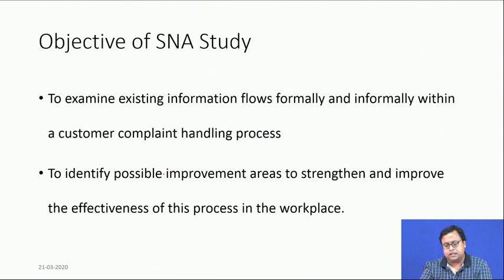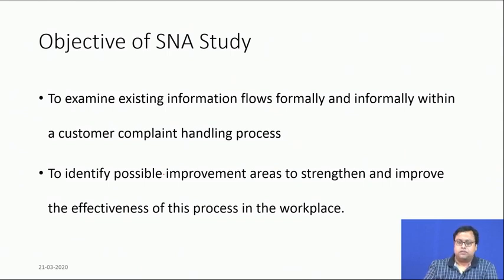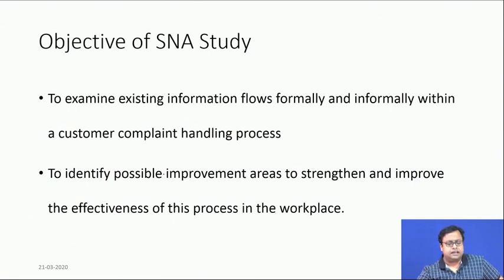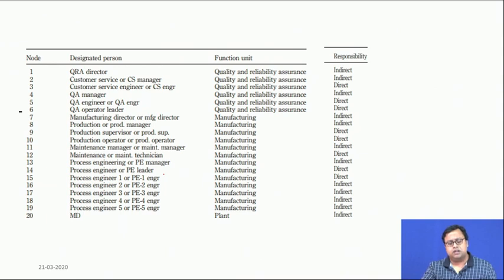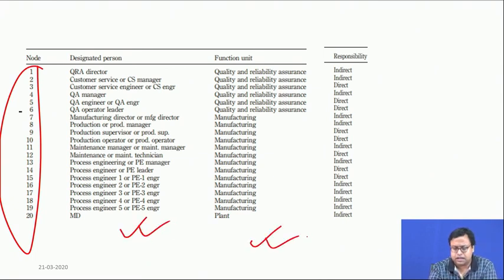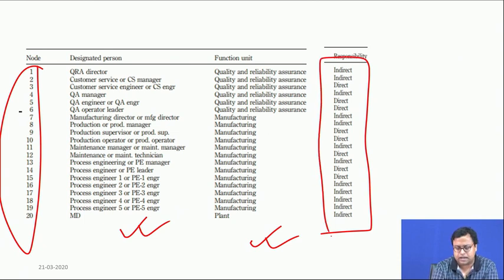To solve this problem, the professors ran a social network study. The objective was to examine the existing information flow — both formally and informally — within the complaint handling process, and to identify possible improvement areas to strengthen the effectiveness of the process. They identified the relevant nodes: PE engineers, PE leaders, QA personnel, their designations, functional units, and whether their responsibility was direct or indirect.